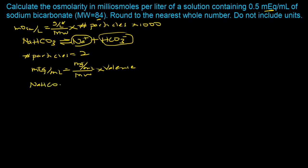For sodium bicarbonate, it dissociates into the sodium cation and the bicarbonate anion. Valence is the absolute value of the charge on either the cation or the anion. The absolute value of +1 is 1, and the absolute value of −1 is also 1, so the valence is 1.